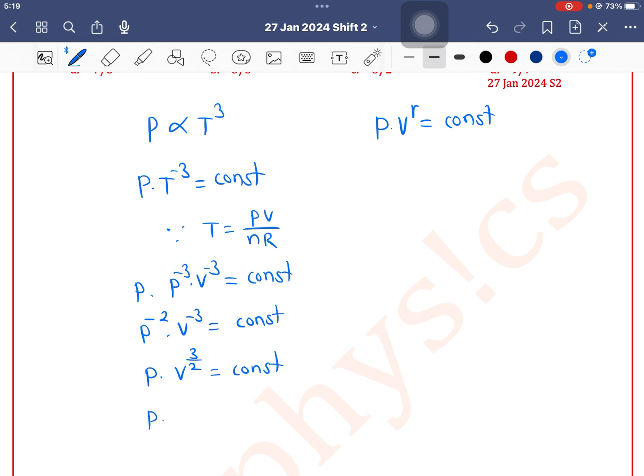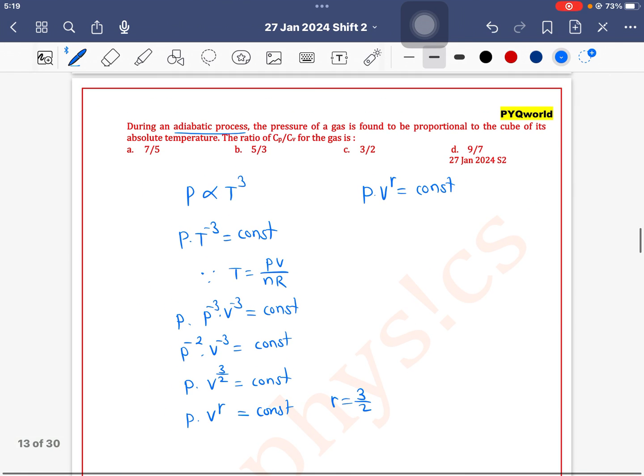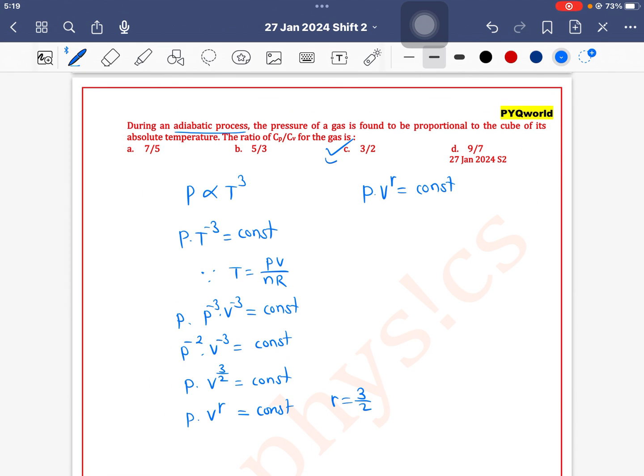If you compare with the standard equation, P into V to the power gamma is equal to constant, so gamma is equal to 3 by 2. Gamma is equal to 3 by 2 means option C is the correct one.